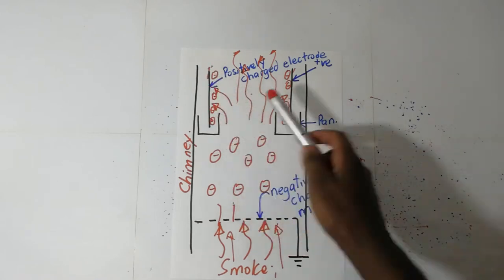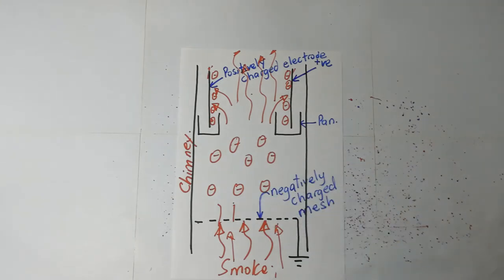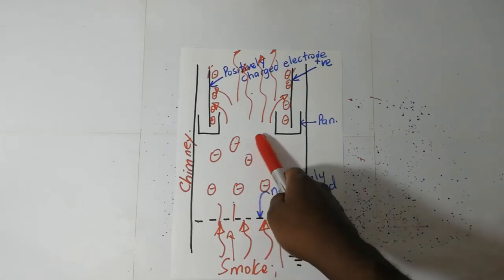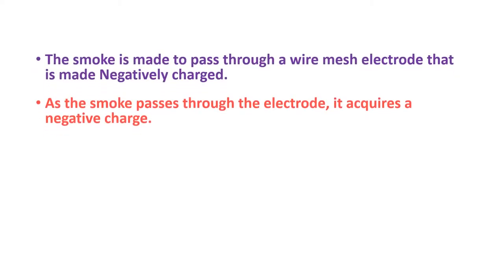The particles or the soot that has gotten stuck onto here is later shaken off and dropped into these pans. For those that might want a write-up for examination purposes, you can simply say that the smoke is made to pass through a wire mesh, and the wire mesh is made negatively charged by connecting it to a negative potential.